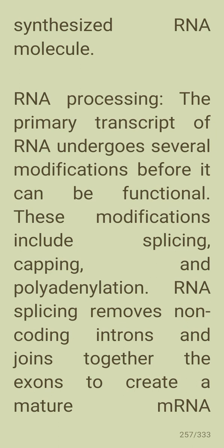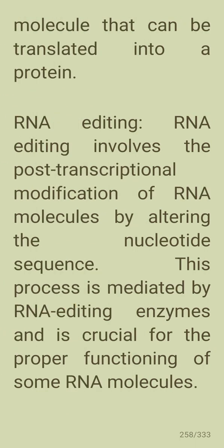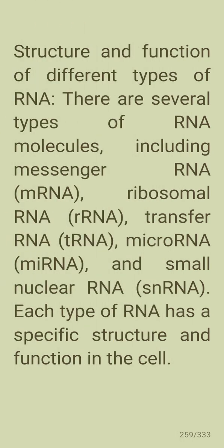The primary RNA transcript undergoes several modifications before it can be functional, including splicing, capping, and polyadenylation. RNA splicing removes non-coding introns and joins together the exons to create a mature RNA molecule that can be translated into a protein. RNA editing involves the post-transcriptional modification of RNA molecules by altering the nucleotide sequence; this process is mediated by RNA editing enzymes and is crucial for the proper functioning of some RNA molecules.